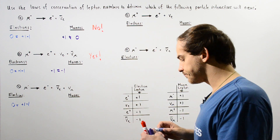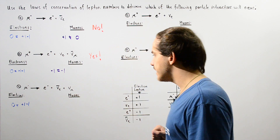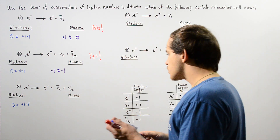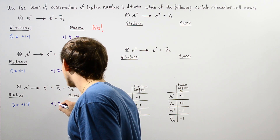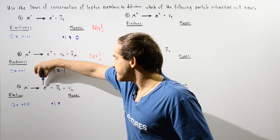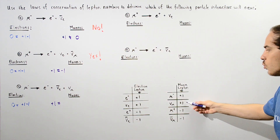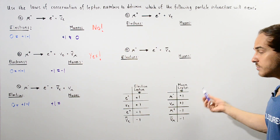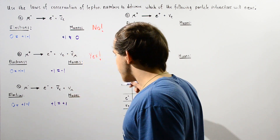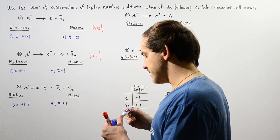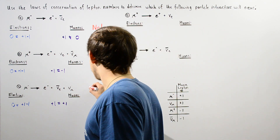What about the muon lepton number for reaction C? On the left side, the muon gets positive one. On the right side, the electron gets zero, the electron anti-neutrino gets zero, and the muon neutrino gets positive one. Positive one equals positive one, so the muon lepton number is also conserved, and reaction C does, in fact, take place.